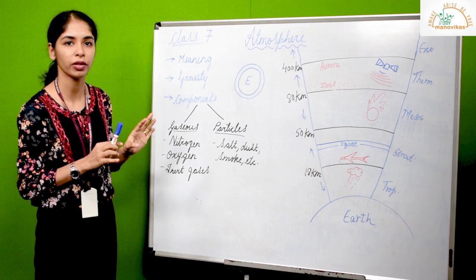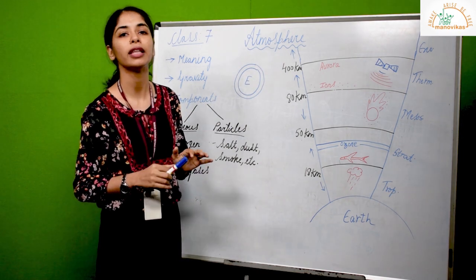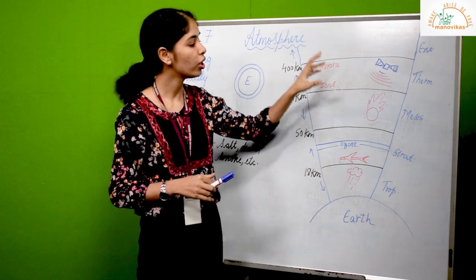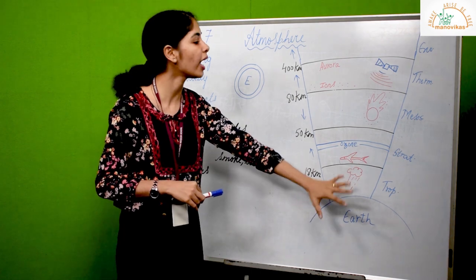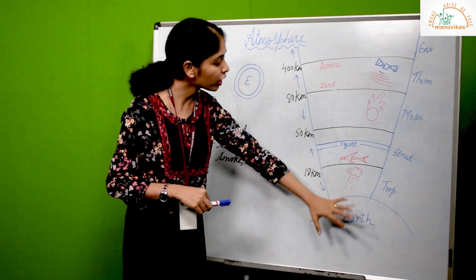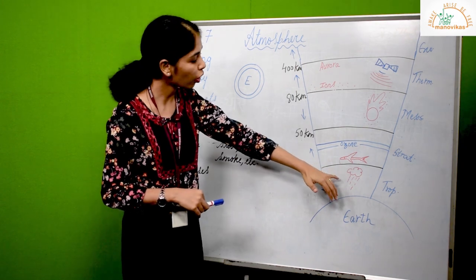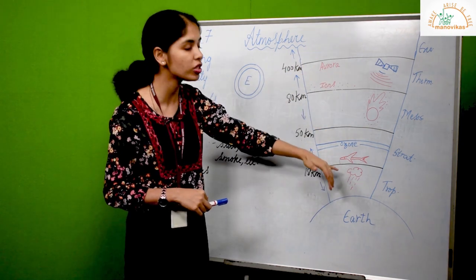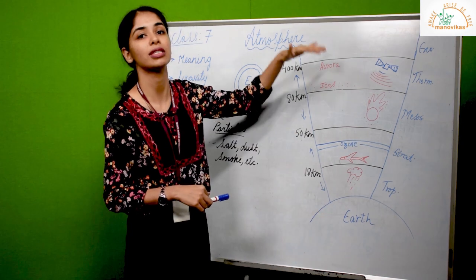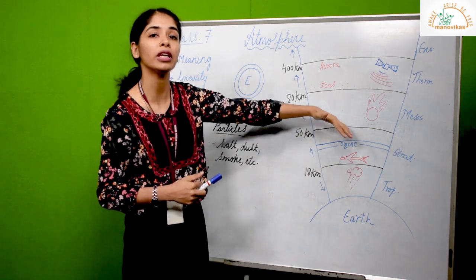Now moving on to the most significant part of the topic: the structure of the atmosphere. Here I've drawn a diagram to show you clearly how atmosphere diagrammatically would look like. Have a look here. This is the earth and this is how the atmosphere actually looks like. You can clearly see that I've made some divisions here.